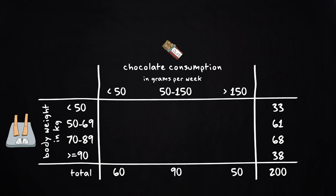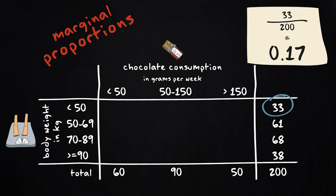We can also ignore the information we have about chocolate consumption and use the counts in the margin of the table. These are marginal proportions. For instance, 33 divided by 200, that makes 0.17. And this proportion tells you that a proportion of 0.17, that's the same as 17%, of the respondents in this study weighs less than 50 kilograms.